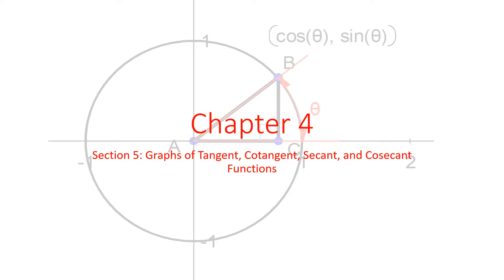Good morning and welcome back to section 5 of chapter 4. In this section we're going to be looking at the other four trig functions. Last section we were looking at the graphs of sine and cosine. We're going to use those to look at the graphs of the tangent, cotangent, secant, and cosecant. Sine and cosine — the sinusoidal graphs — are hugely useful. We model a lot of things with them. Tangent has some uses, so we'll look at that as one of our basic graphs. The other three we don't use as much, and even with tangent we don't do as much with these four as we do with sine and cosine, specifically with all of the different transformations.